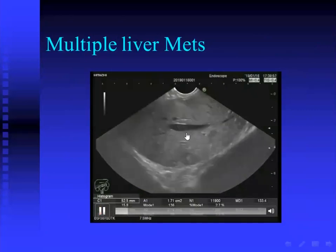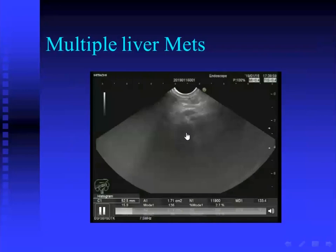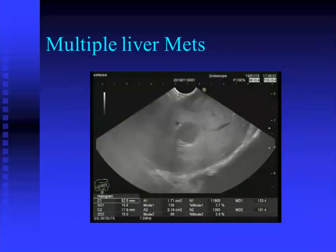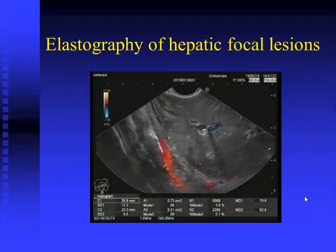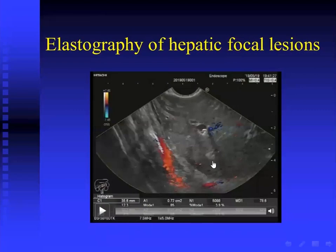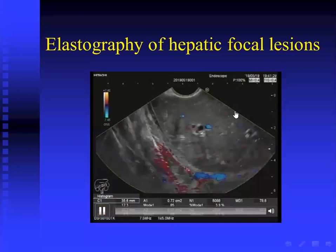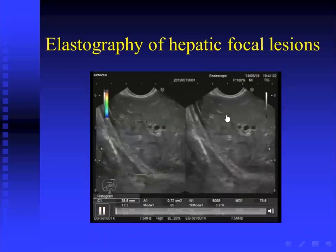There are multiple hepatic focal lesions, highly impressive of liver metastasis. We can also use our own weapon during endoscopic ultrasonography examination: real-time elastography, especially in hepatic focal lesions. In metastasis occurring in a normal healthy liver, the normal liver is very soft and the metastatic lesion is very hard, so the difference is very clear between the pathology and the normal liver. Elastography is therefore very accurate.